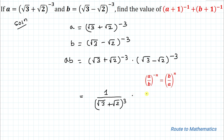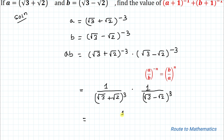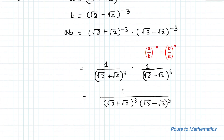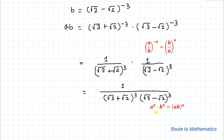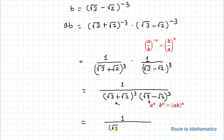That is 1/(√3 + √2)³ multiplied with 1/(√3 − √2)³, multiplied with (√3 − √2)³. So we can write this as 1/[(√3 + √2)³ × (√3 − √2)³]. Now applying another exponential rule: a^n × b^n = (ab)^n. Considering (√3 + √2) as a and (√3 − √2) as b, we write 1/[(√3 + √2)(√3 − √2)]^3.